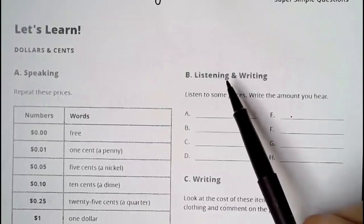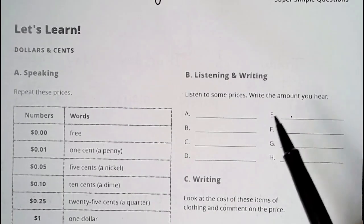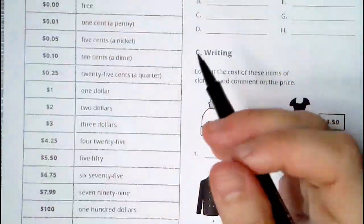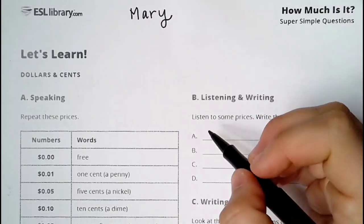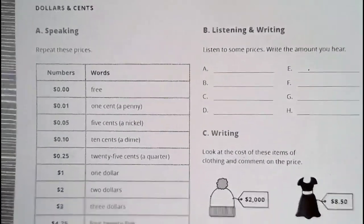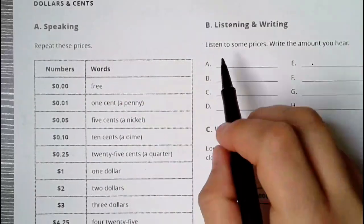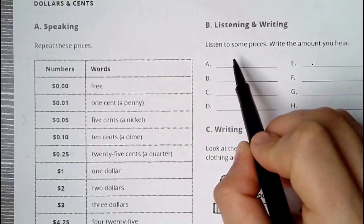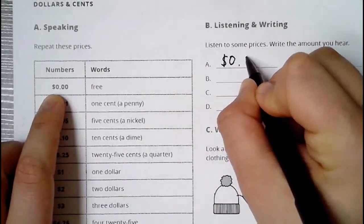Now, listening and writing. Listen to some prices and write the amount you hear. I say the words, you listen and write the numbers. We'll do a few together. A: free — that's zero dollars and zero cents. B: four twenty-five. So we write a dollar sign, four, decimal point, twenty-five.